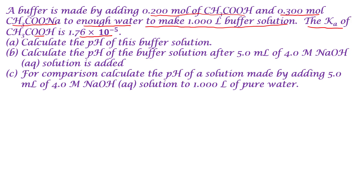Given this information, they're asking you three questions. First, what is the pH of the buffer solution? The second question is: what is the pH of the buffer solution after 5 ml of 4 molar NaOH solution is added? And then in Part C, for comparison with Part B, calculate the pH of a solution made by adding 5 milliliters of 4 molar NaOH solution to 1 liter of pure water. So these are the three parts to the problem, and we're going to do them one by one.